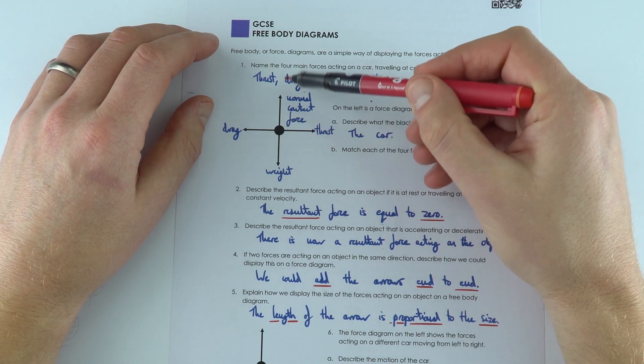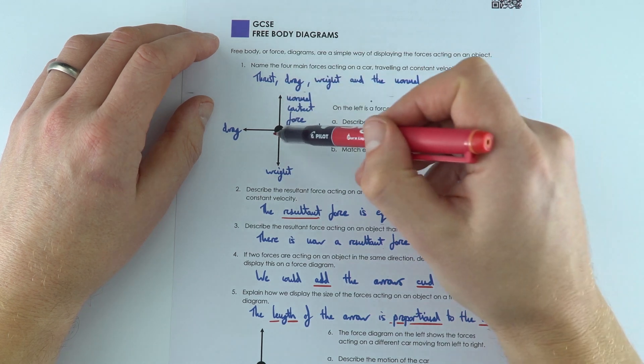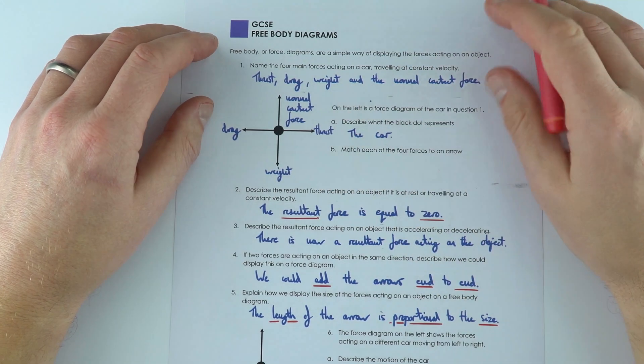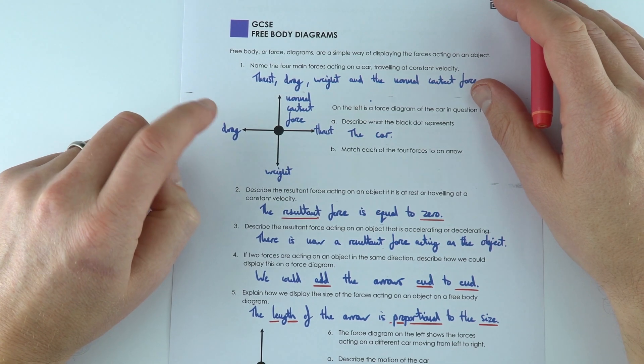We've got the weight acting down, the normal contact force acting up, we've got the thrust caused by the engine, and then we've got the drag which is including the friction with the wheels and also air resistance.